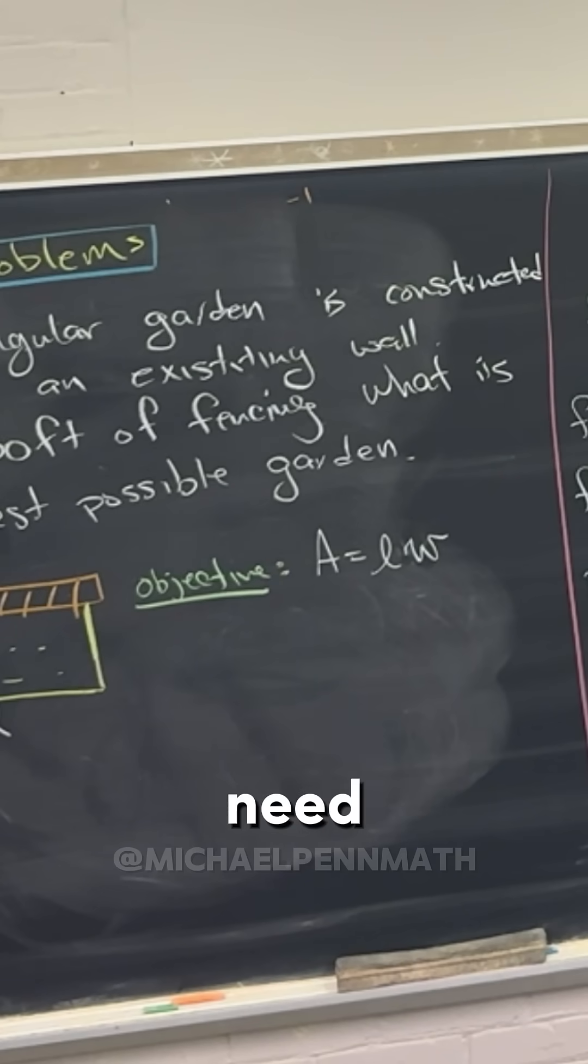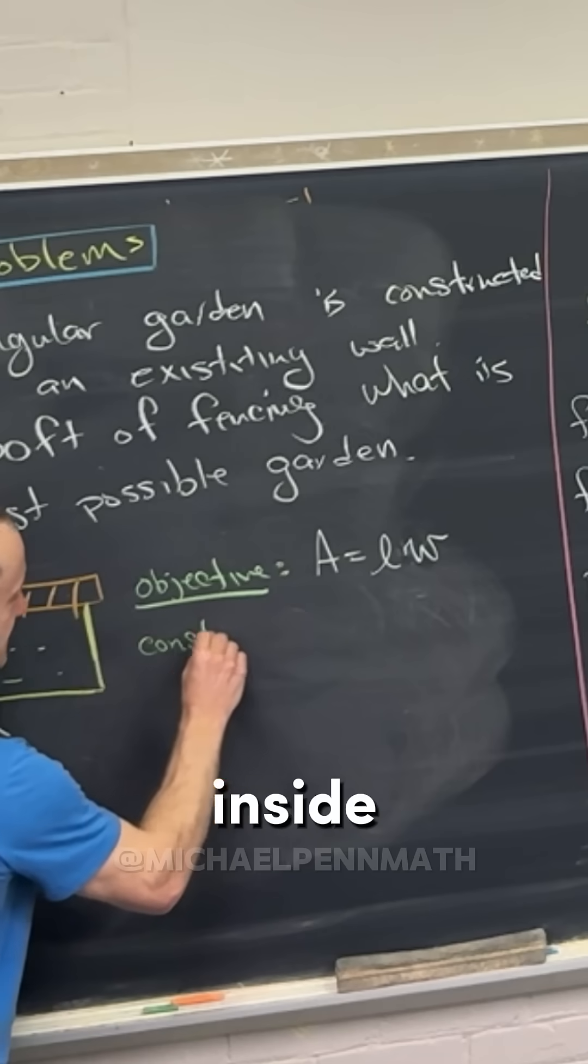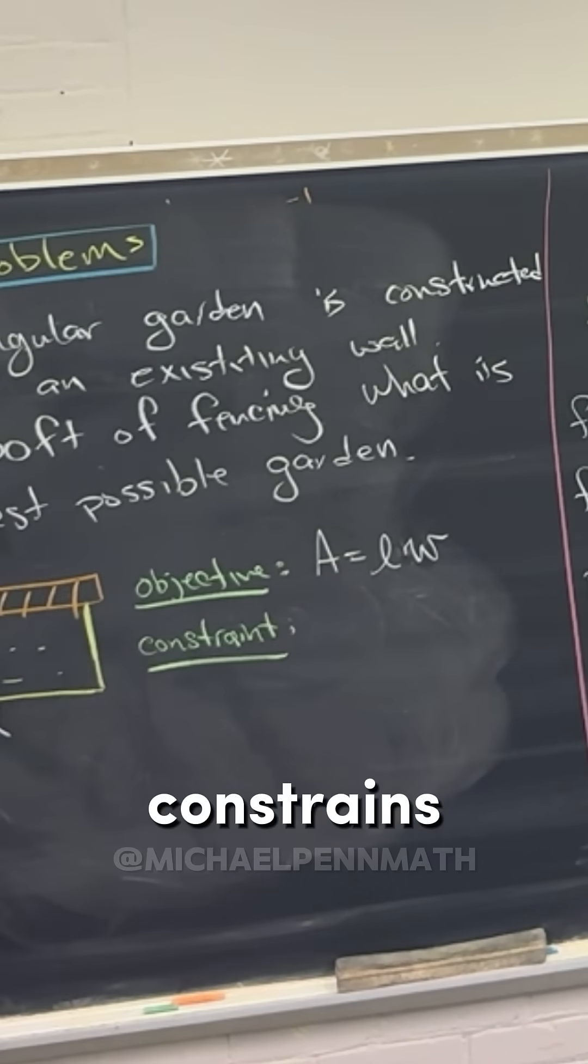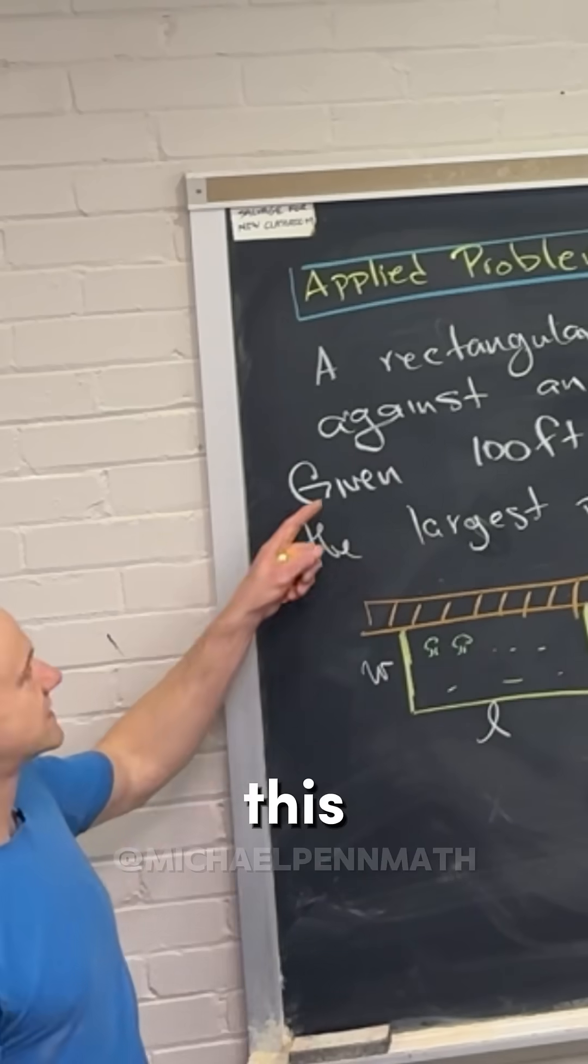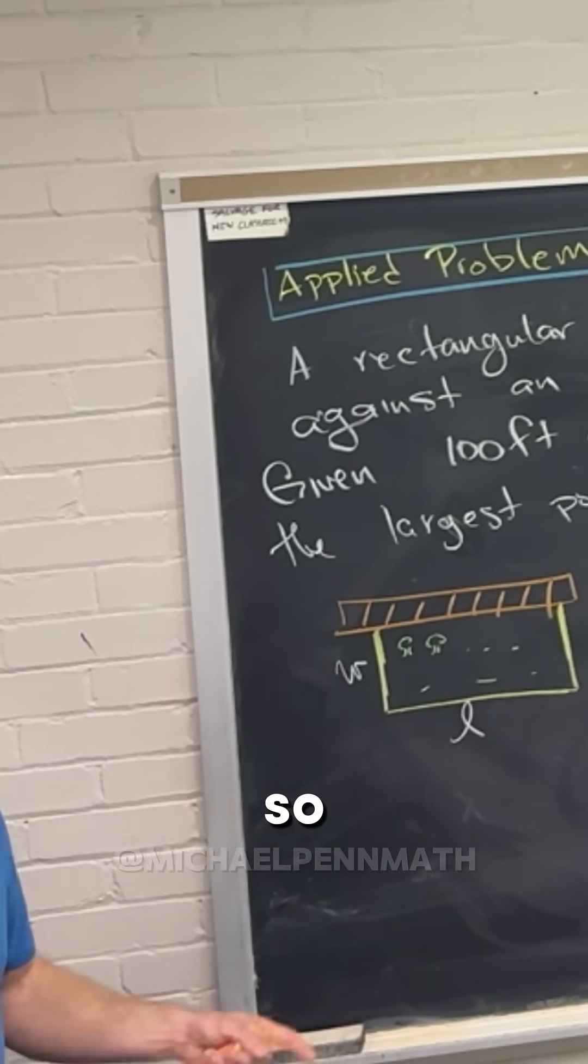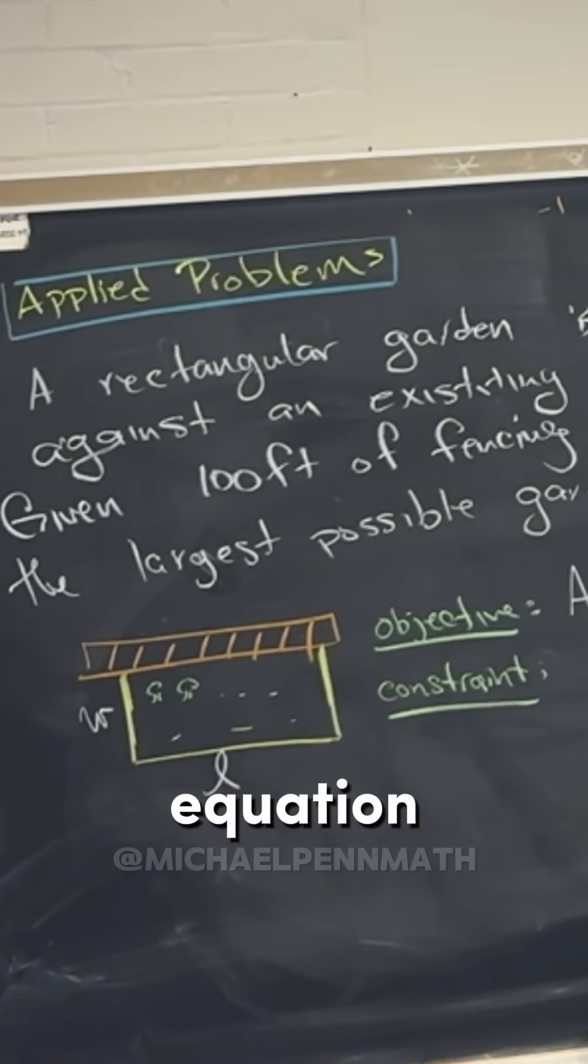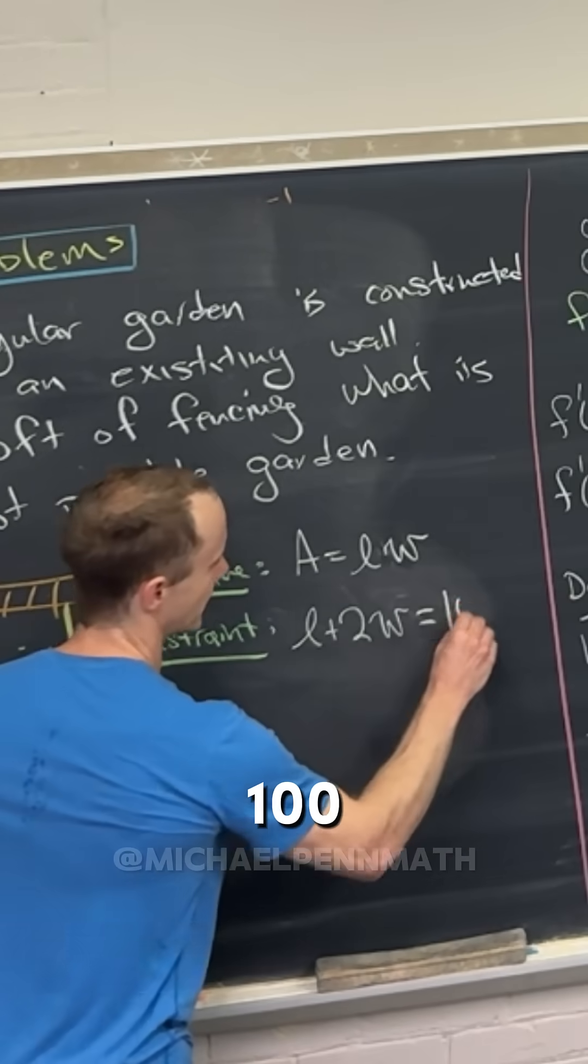We need a constraint equation. There's a phrase inside this problem that constrains the two variables, which is: you're given 100 feet of fencing. So if you've got 100 feet of fencing and this picture, what's your constraint equation? We've got L plus 2W equals 100.